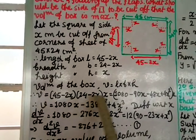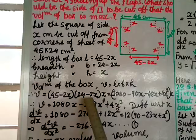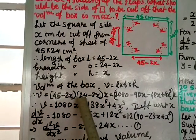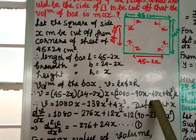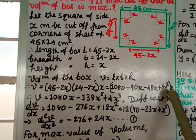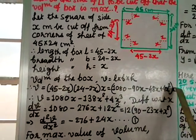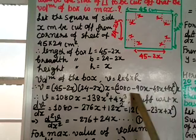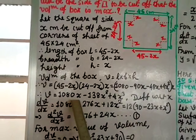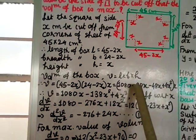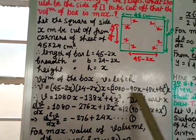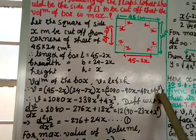Expanding: 45 into 24 is 1080, 45 into minus 2x is minus 90x, minus 2x into 24 is minus 48x, minus 2x into minus 2x is 4x squared. Multiplying through by x gives V = 1080x minus 138x squared plus 4x cubed.